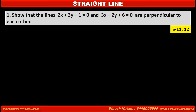Exercise 9.1. Show that the lines 2x plus 3y minus 1 is equal to 0 and 3x minus 2y plus 6 is equal to 0 are perpendicular to each other.